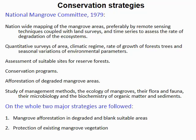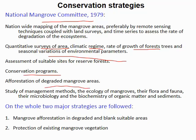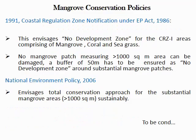Conservation strategies include lots of mangrove committees, environmental laws, and wildlife protection acts. The National Mangrove Committee was formed in 1979. Its main responsibilities are to assess mangrove forest through quantitative surveys, monitor climate regime and forest growth, track environmental parameters, and run conservation and awareness programs including afforestation. Two major strategies are followed: first, mangrove afforestation — identifying blank areas and planting new mangrove to increase vegetation cover; and second, protection of existing mangrove forest.